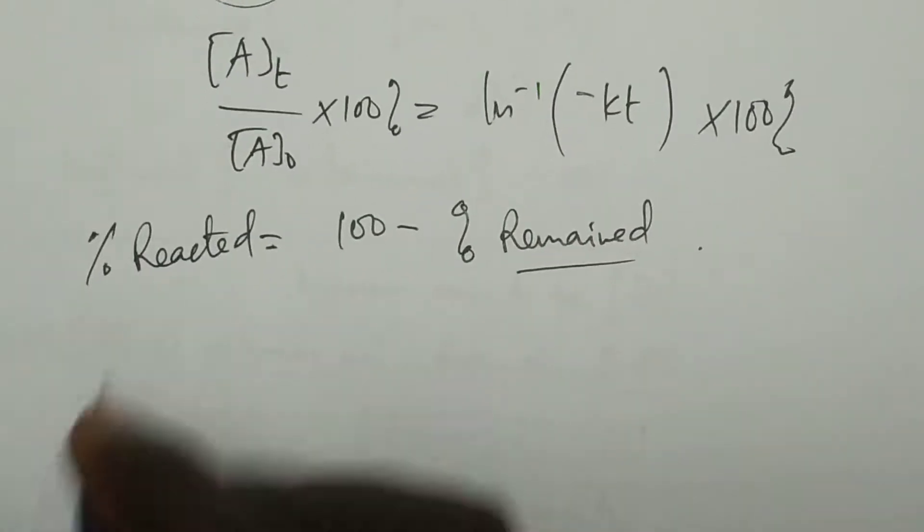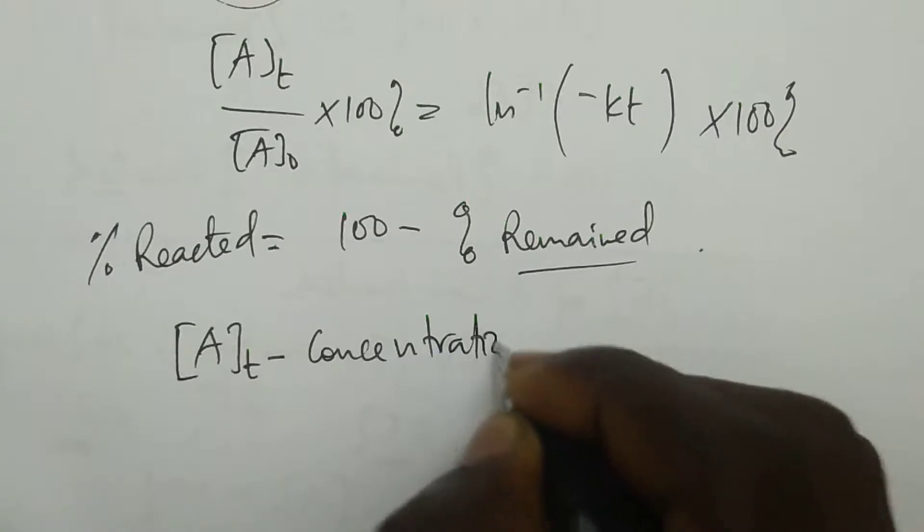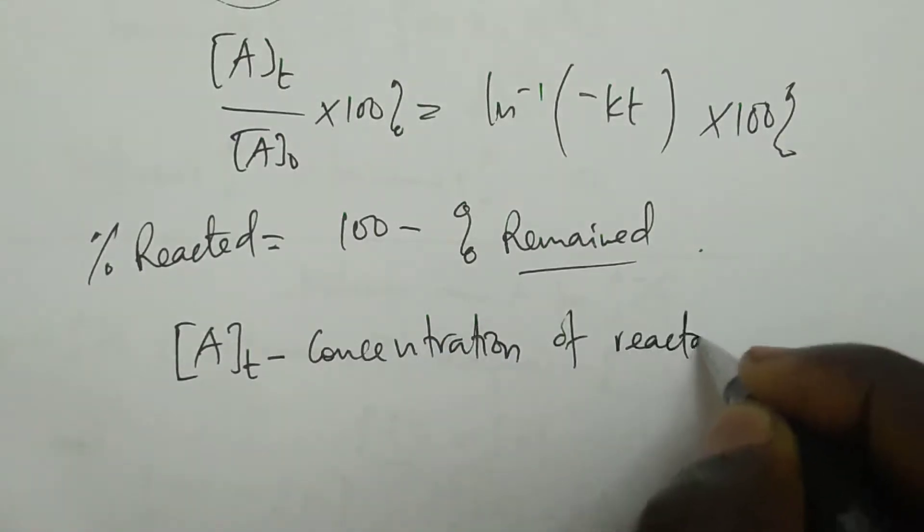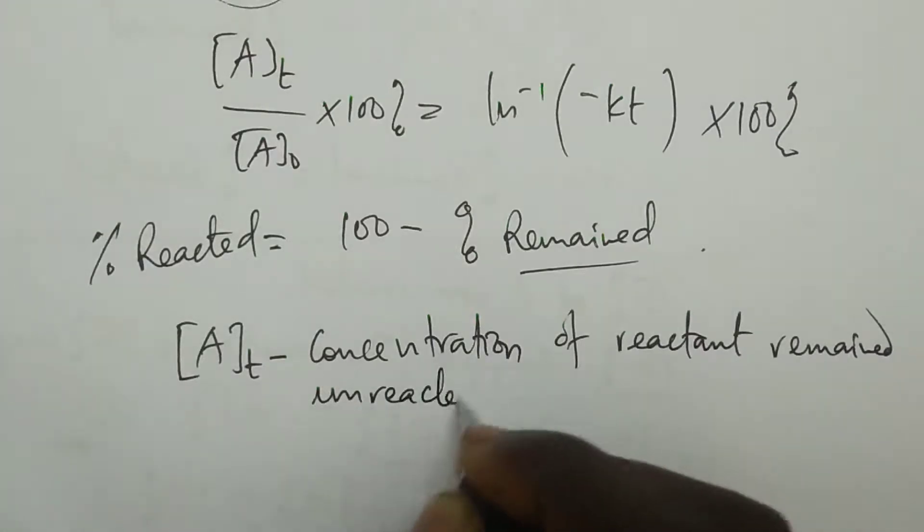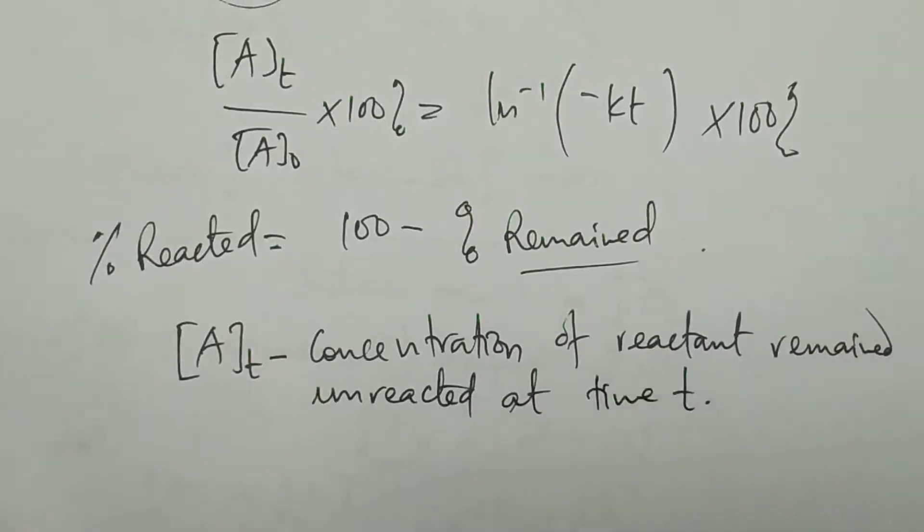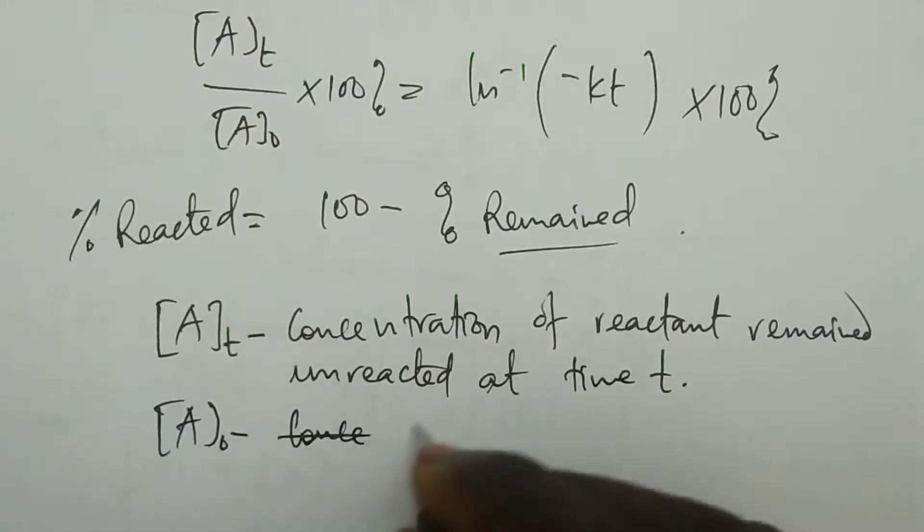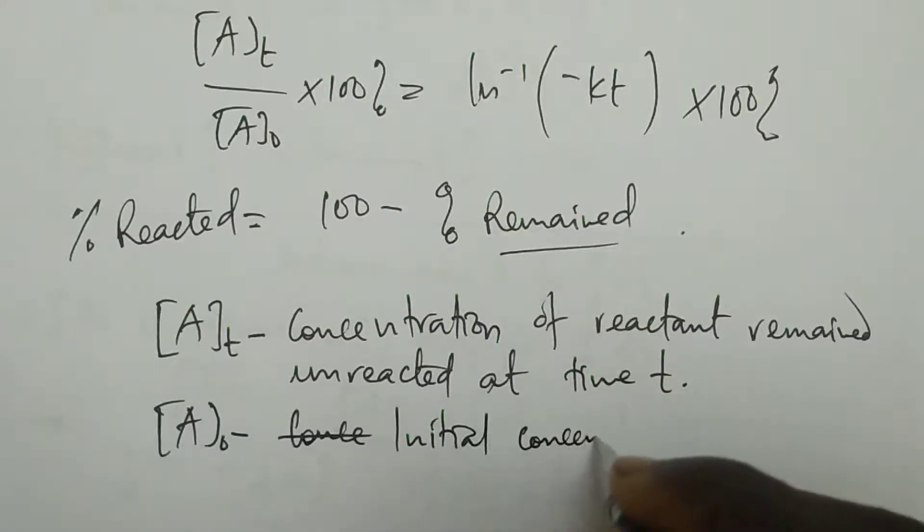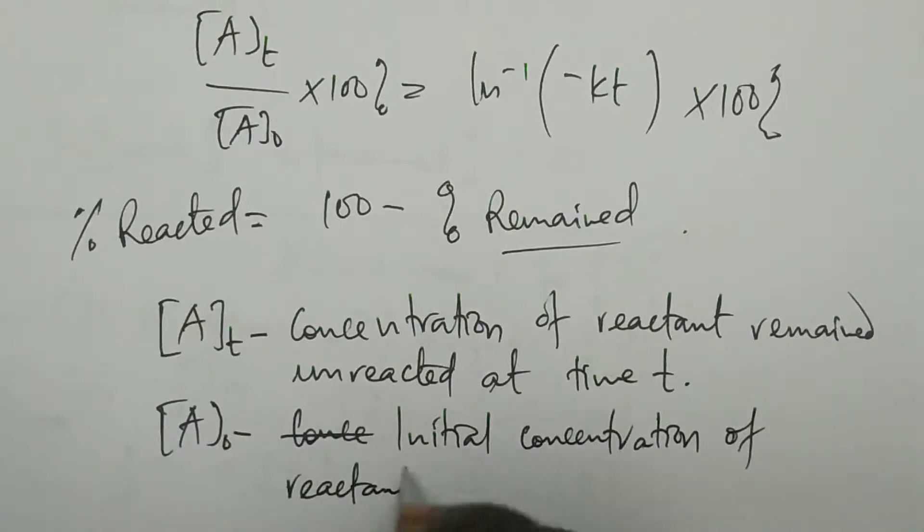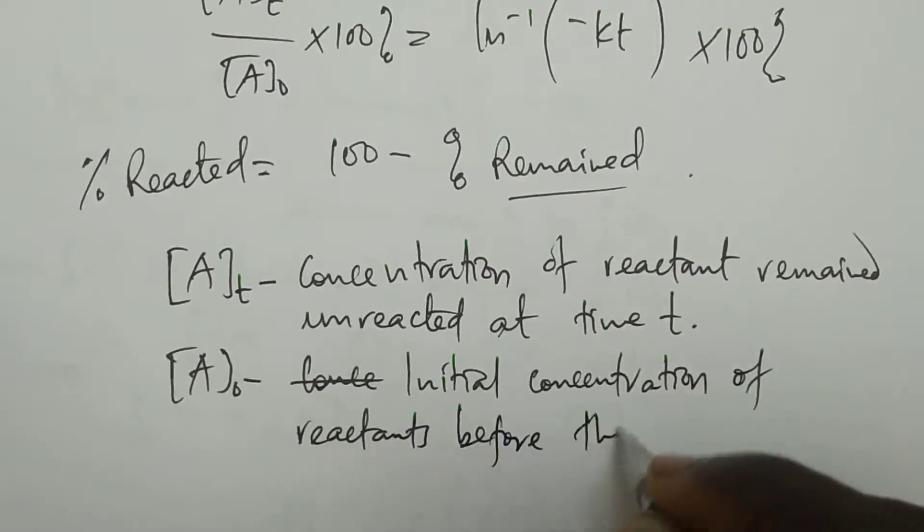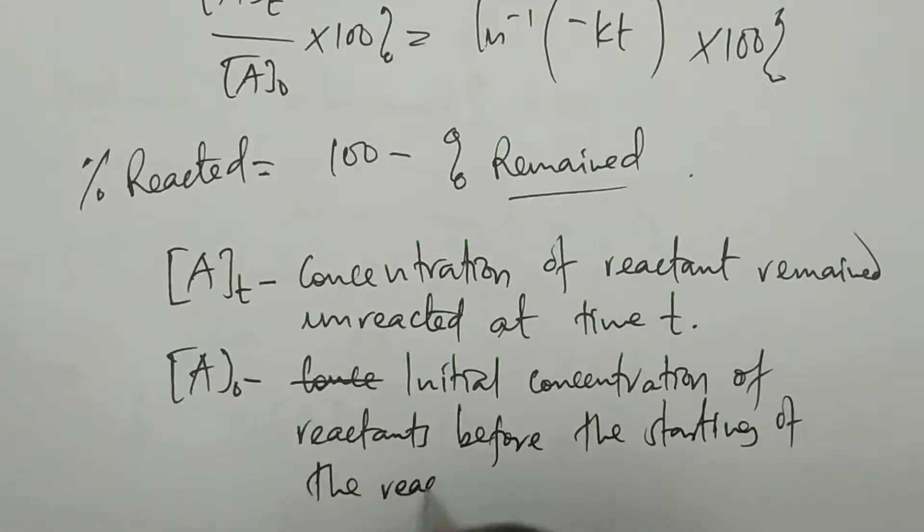One thing you need to note, or to remember, is that you can take a concentration Aₜ is the concentration of reactant remained, remained unreacted, at time T, any time of the reaction. Likewise any concentration A₀ is the concentration or we can say the initial concentration of reactants before the start, for the starting of the reaction.